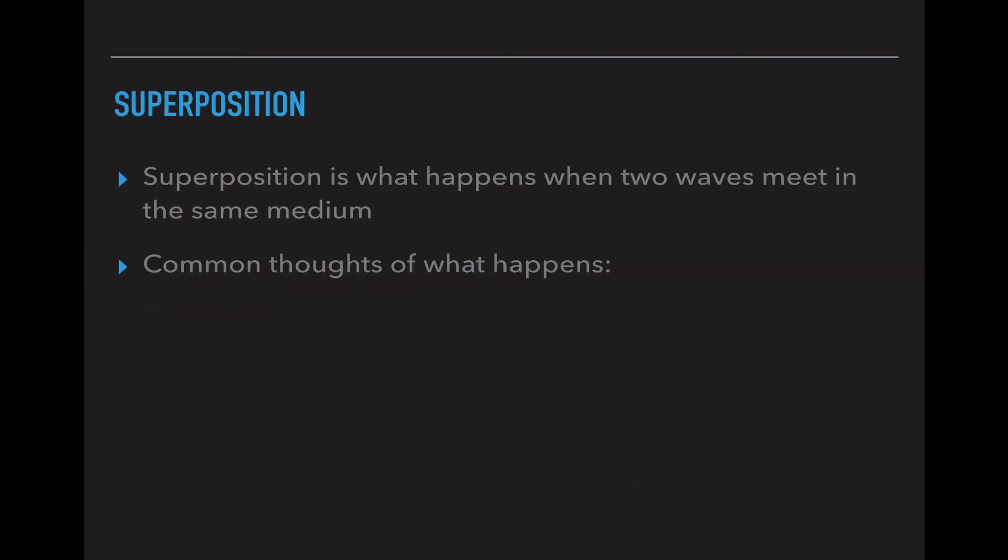Now the last thing we're going to talk about is superposition. This is what happens when two waves meet in the same medium. There are some common misconceptions though. Whenever we do this in class, a lot of people think that the waves bounce off of each other. So if one wave is traveling from the left to the right and one's traveling from the right to the left, when they hit in the center, they're going to go backwards towards the direction they came from.